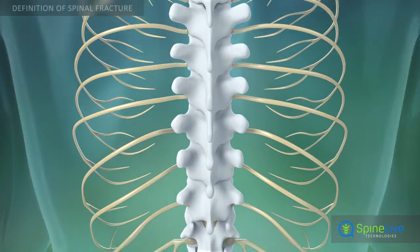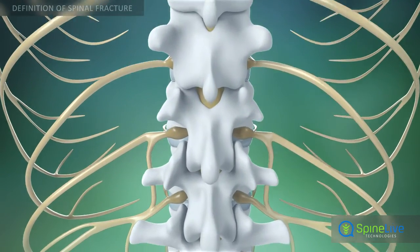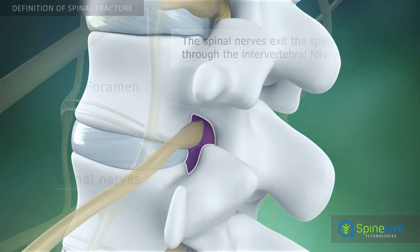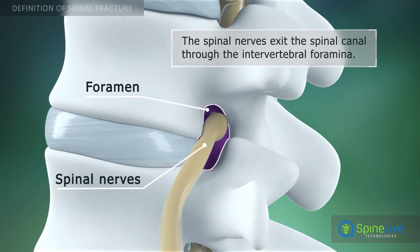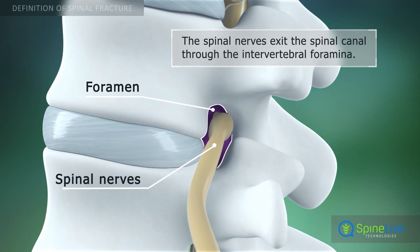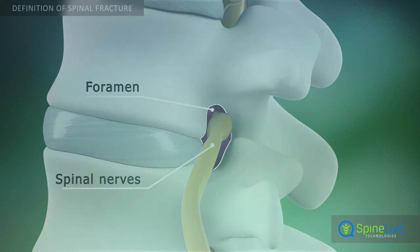The spinal nerves branch off your spinal cord in pairs and travel through small openings between your vertebrae called the intervertebral foramina.